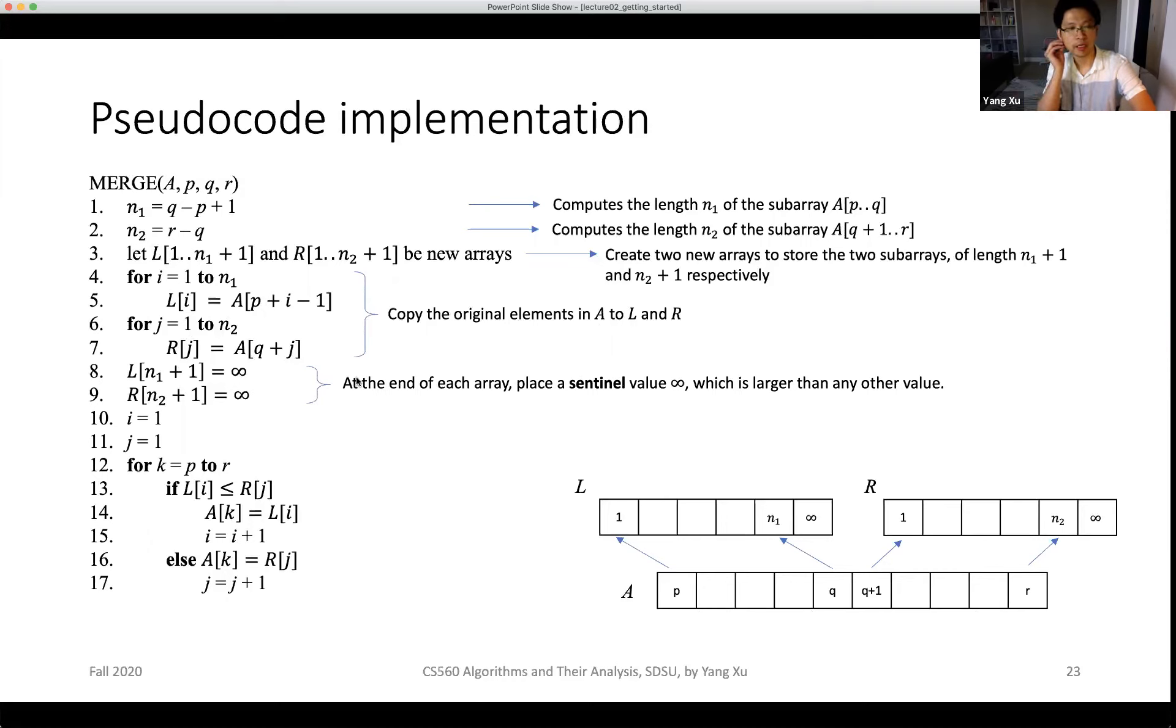One more thing: why L and R have plus 1 number of elements is because we need the end of the array to be some sentinel value, like the infinity value. This will make the procedure more concise, because everything is smaller than the infinity value. So we don't need to frequently check whether the sub-array is empty or full. This is simply for the convenience of comparison.